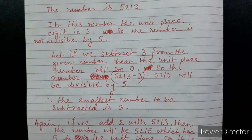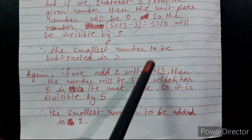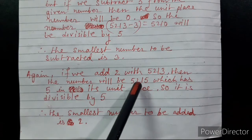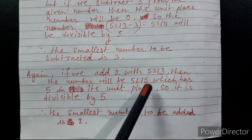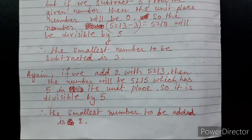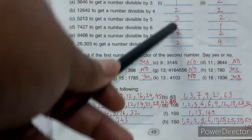For the second part: if we add 2 to 5213, we get 5215, which is divisible by 5 as 5 is in the unit's place. So the smallest number to be added is 2. We write 3 in the subtract column and 2 in the add column.